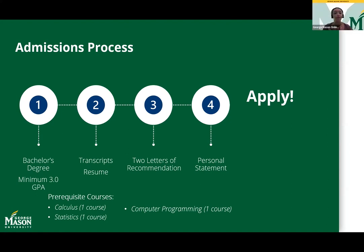The admissions process is pretty self-explanatory. We do have some prerequisites for the data analytics engineering program: one course of calculus, one course of statistics, and one computer programming course. We also ask that you have a minimum 3.0 GPA and a bachelor's degree from an accredited institution. We ask that you submit your transcripts and your professional resume — make sure it's up to date. We also ask for two letters of recommendation, which must be professional and not personal. There is also a personal statement that needs to be written for the application.